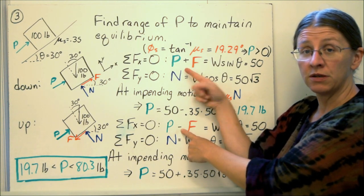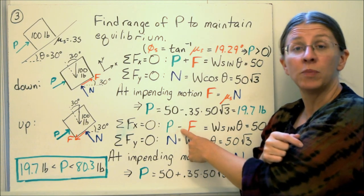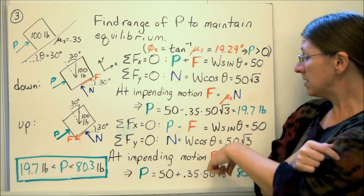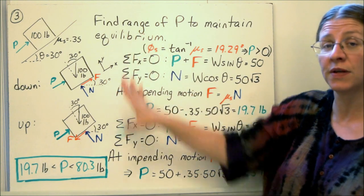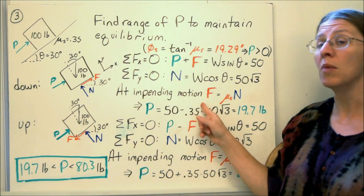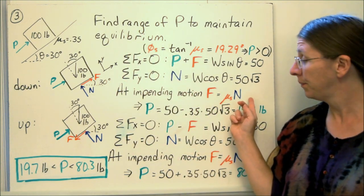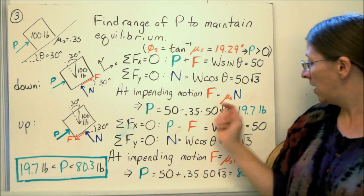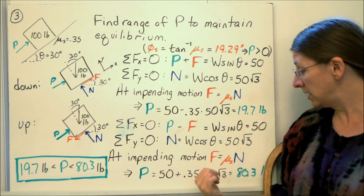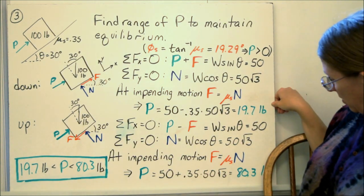If the block is sliding down, f and p are in the same direction. If the block is sliding up, f and p are in opposite directions. So these are my equations of equilibrium. After I write my equations of equilibrium, I can say, at impending motion, f is equal to μs times n. And in both cases, I can solve. I get 19.7 in one case, and 80.3 in the other, 80.3 pounds.